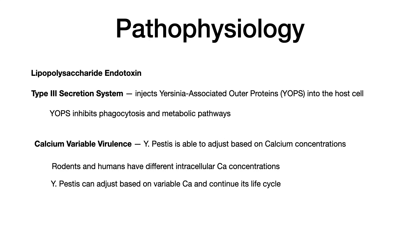For virulence and pathophysiology, just a couple of things to know. This has a lipopolysaccharide endotoxin and a type 3 secretion system. With the secretion system, the bacterial product gets injected into the host cell directly. There is the presence of Yersinia-associated outer proteins, or YAPs, and the YAPs are what get injected through the type 3 secretion system. Once those get into the host cell, they inhibit phagocytosis and inhibit different metabolic pathways, which makes the bacteria essentially grow out of control and evade immune response from the host.